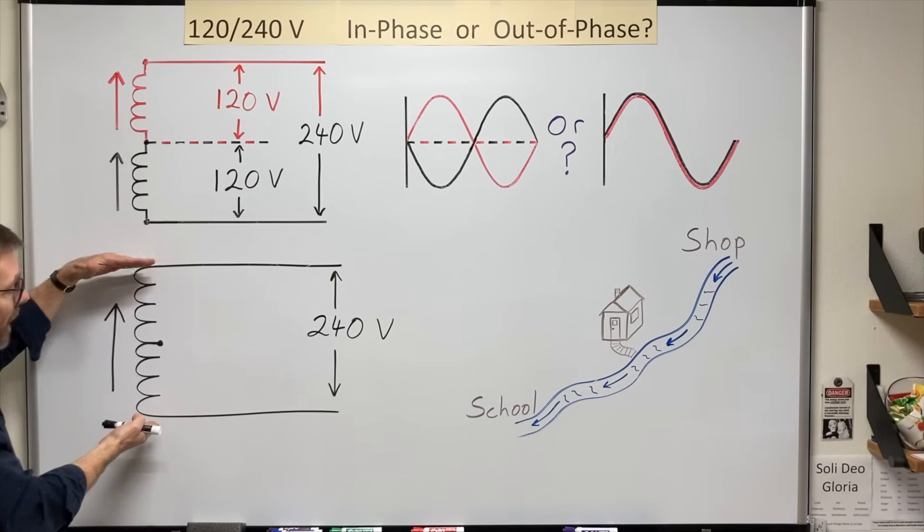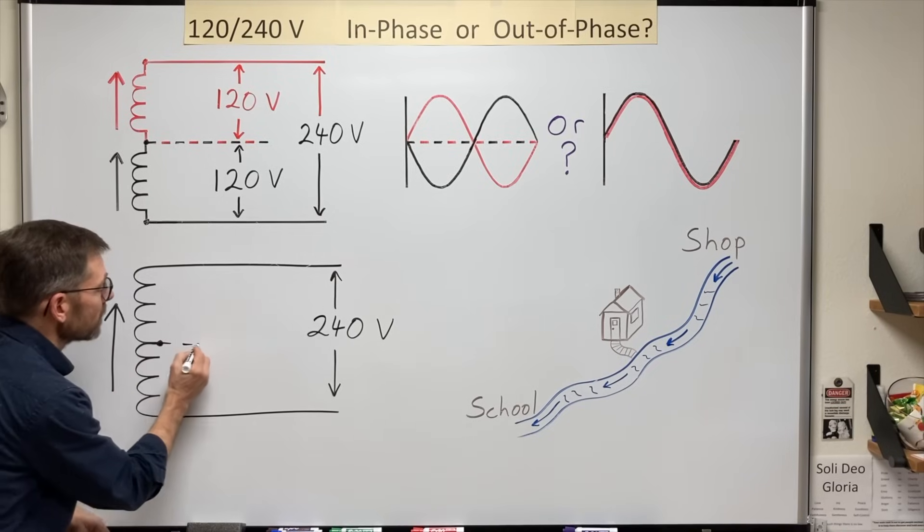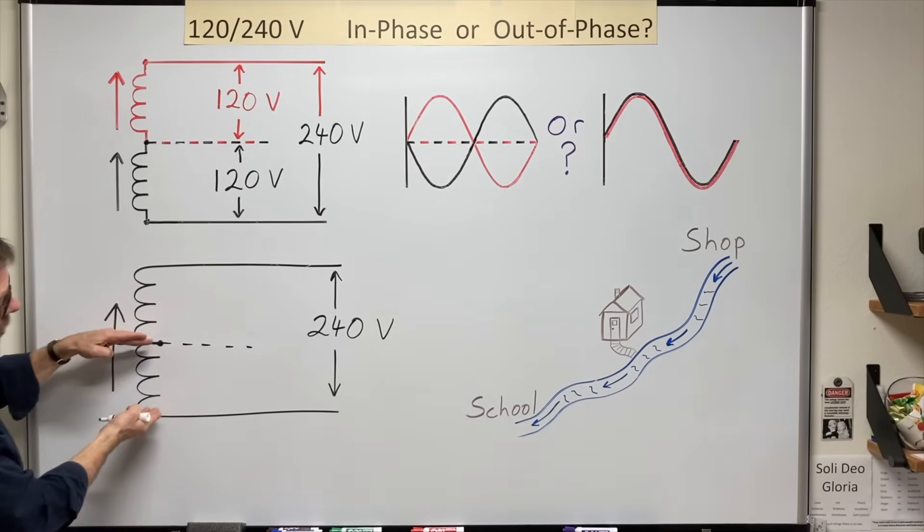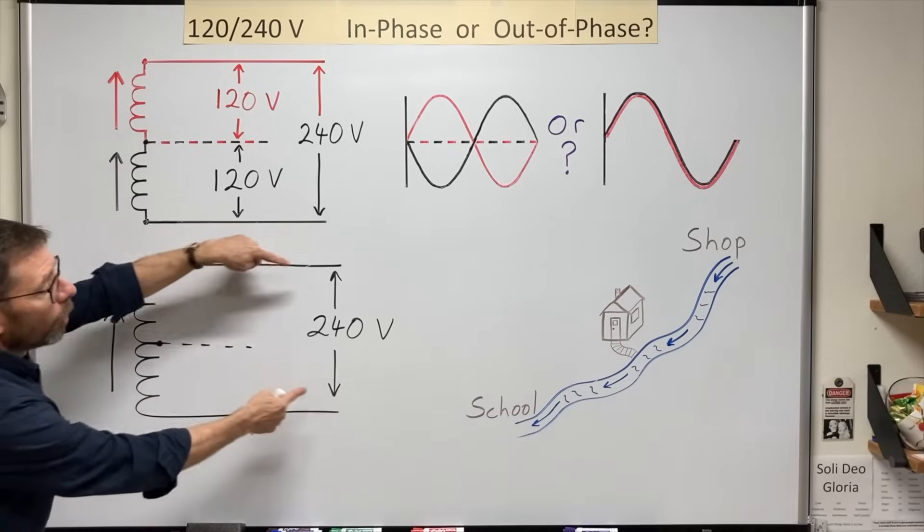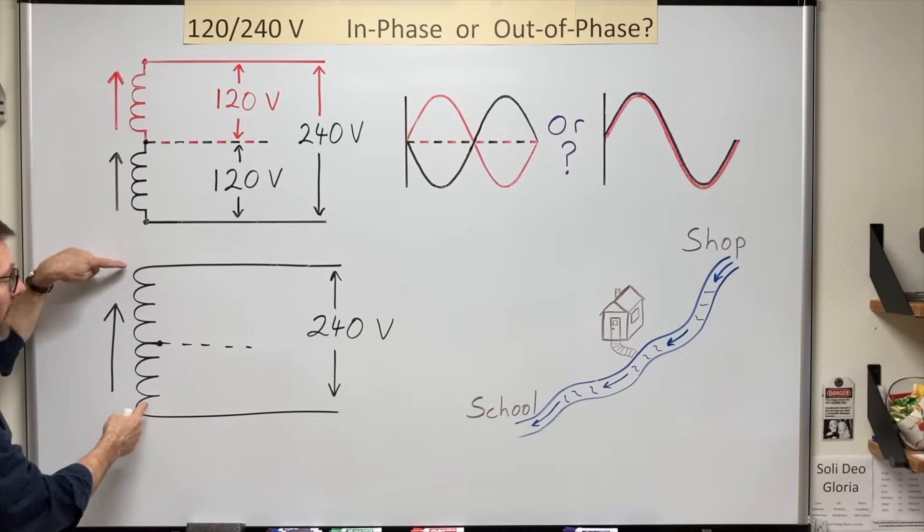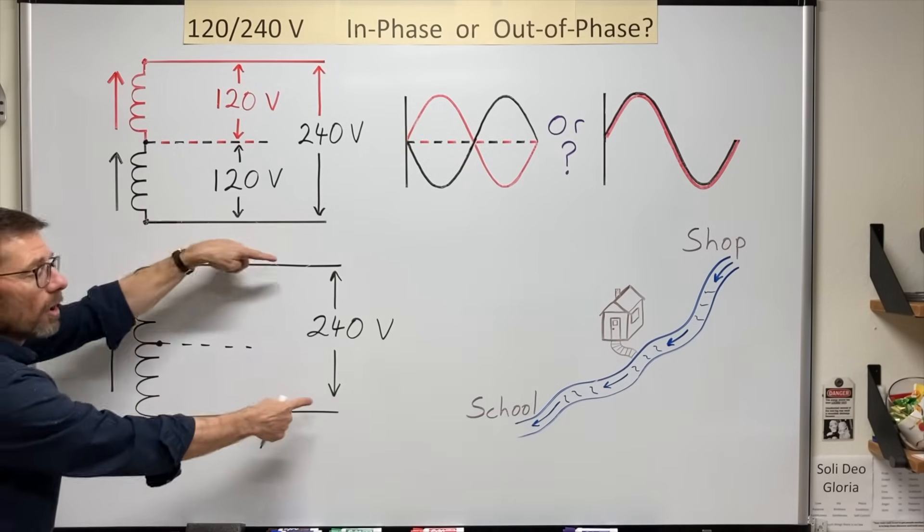Split the single phase winding into two parts. Now I have 120 volts here, 120 here, and all the while I have maintained my 240 across the whole thing.